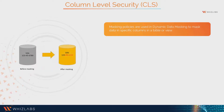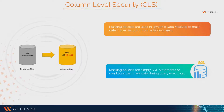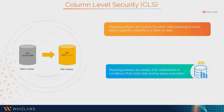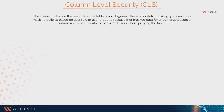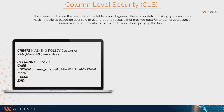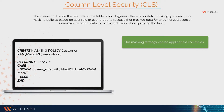Masking policies are used in dynamic data masking to mask data in specific columns in a table or view. Masking policies are simply SQL statements or conditions that mask data during query execution. This means that while the real data in the table is not disguised, there is no static masking. You can apply masking policies based on user role or user group to reveal either masked data for unauthorized users or actual data for permitted users when querying the table. This masking strategy can be applied to a column as shown.